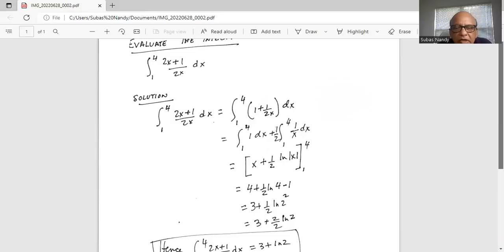After we do the integration, 1 dx is x and half of 1 over x integration is half ln of the absolute value of x.